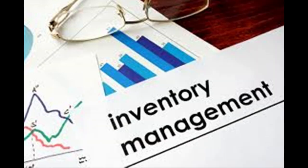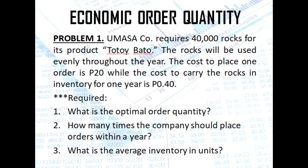Let us begin our discussion on inventory management with the first problem on economic order quantity. Umasa Company requires 40,000 rocks for its product, Totoy Bato. The rocks will be used evenly throughout the year. The cost to place one order is 20 pesos while the cost to carry the rocks in inventory for one year is 0.40 pesos.